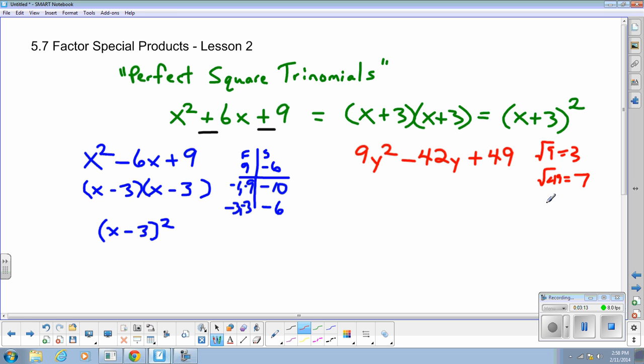Middle number has to be doubled. What does 21 double? 21 times 2, that's 42. So it looks like I do have a perfect square trinomial here. So this one can follow the pattern.